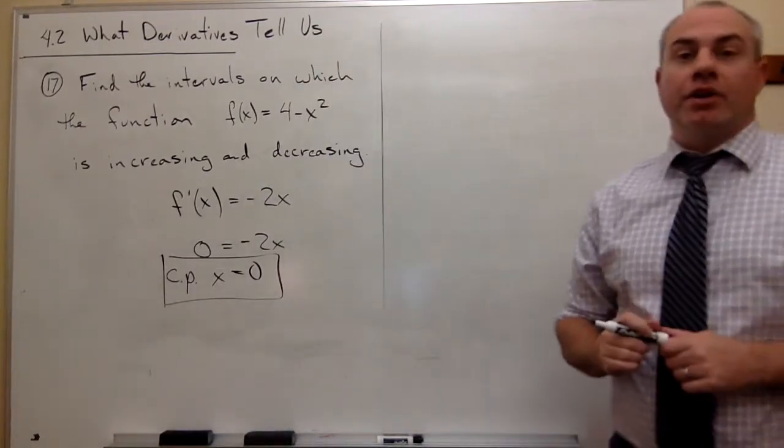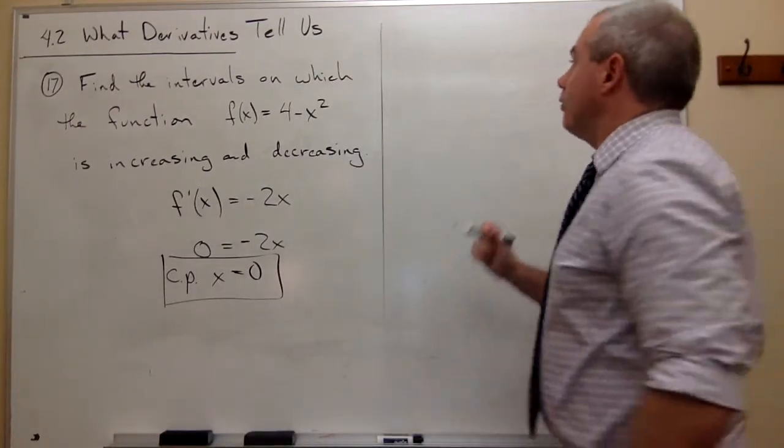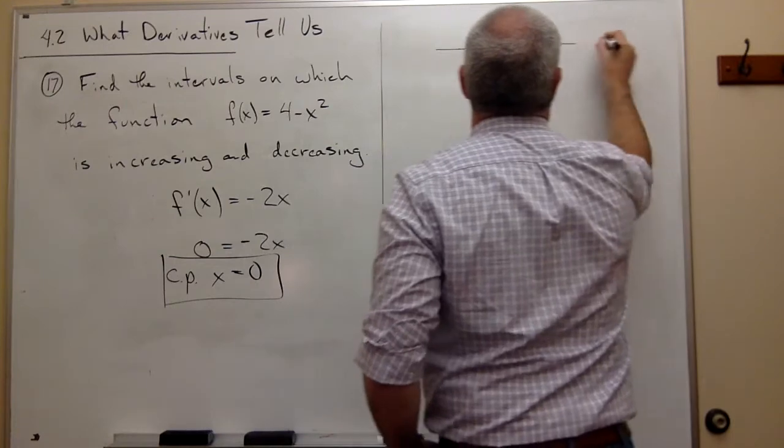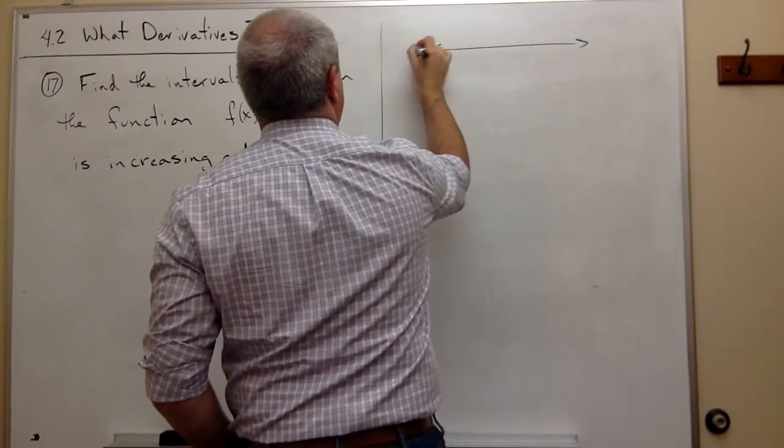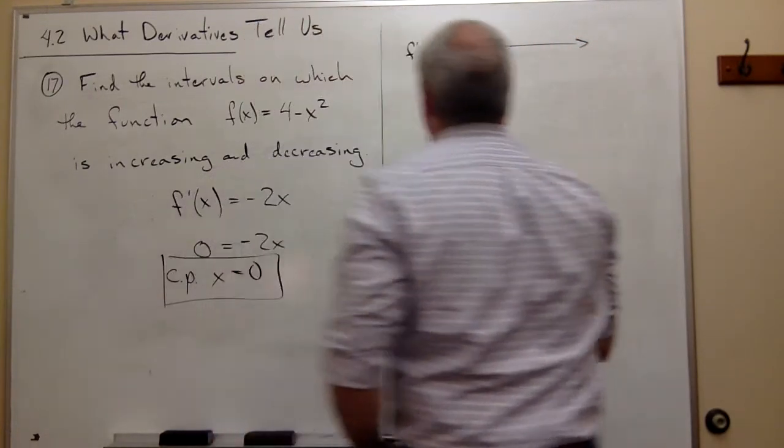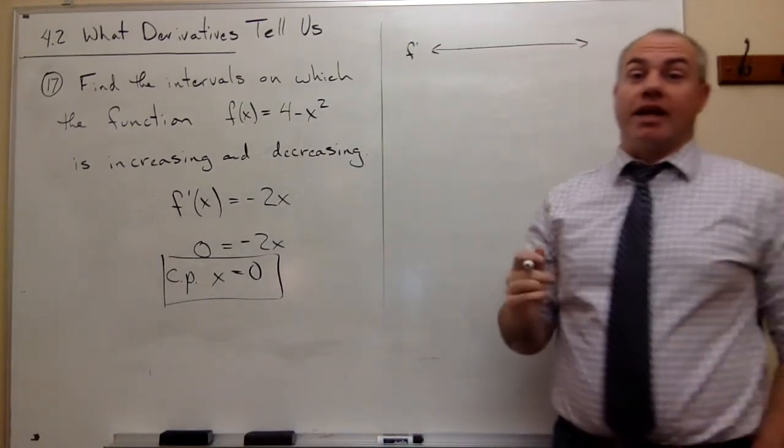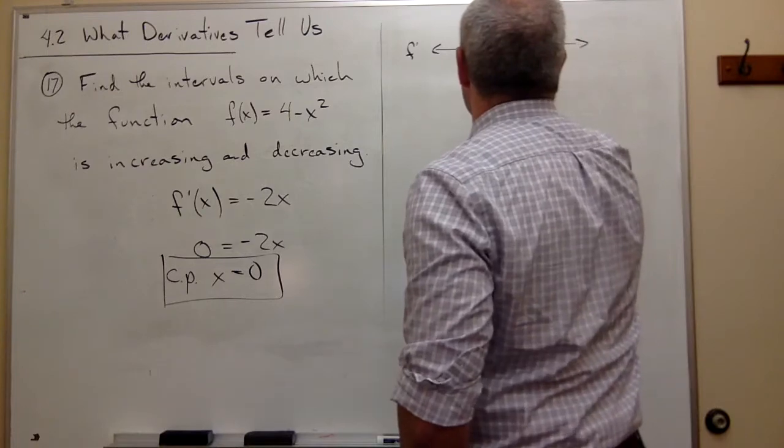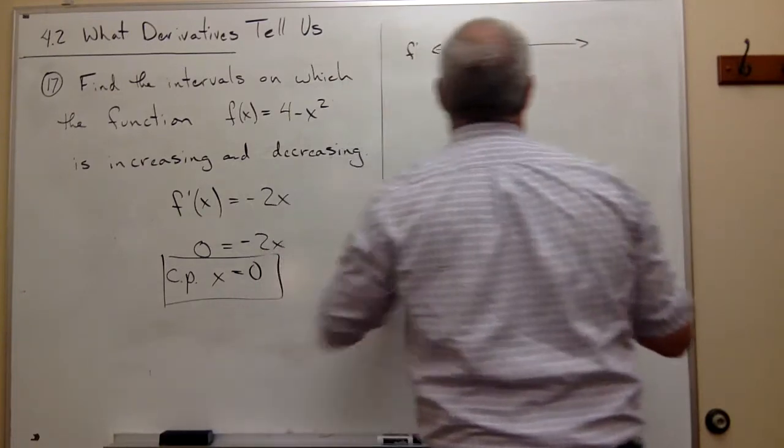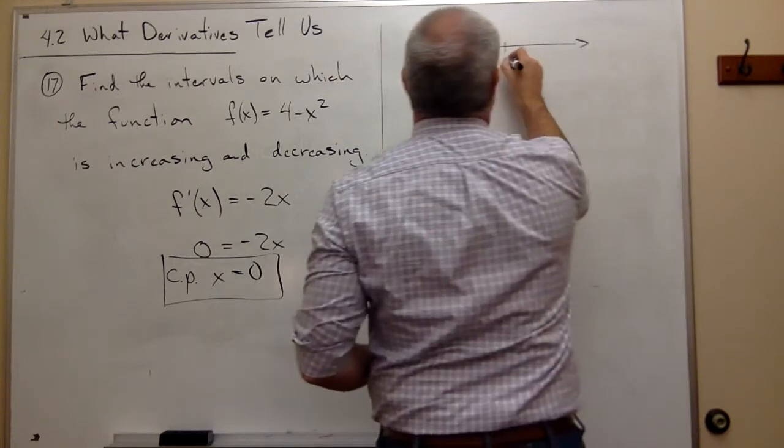Now, once we know what the critical point is, what I want to do is make a number line and put all of my critical points on that number line. In this case, I only have one critical point at x = 0. So I put a 0 on here.